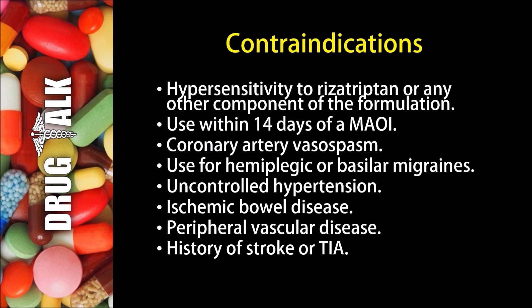With respect to contraindications, we wouldn't be able to give this medication to a patient who had a hypersensitivity to Rizatriptan or to any other component of the formulation. It's not to be used within 14 days of a monoamine oxidase inhibitor. Patients with coronary artery vasospasm would not be able to use this medication, and it shouldn't be used to treat hemiplegic or basilar migraines. Patients with uncontrolled hypertension or high blood pressure should not use Rizatriptan, as well as patients who have ischemic bowel disease or peripheral vascular disease. Also, patients with a history of stroke or transient ischemic attack, TIA, should also not use this medication.